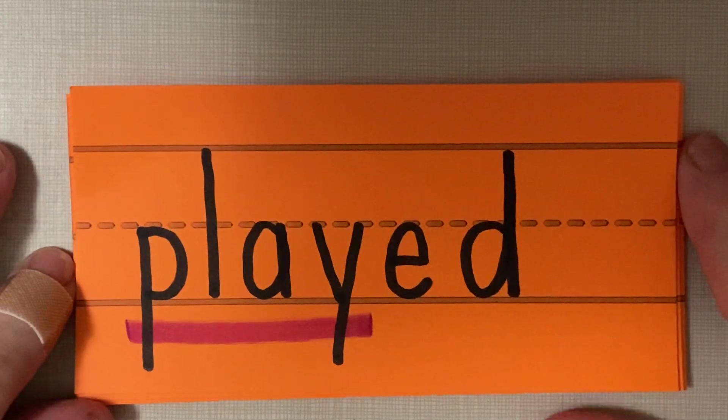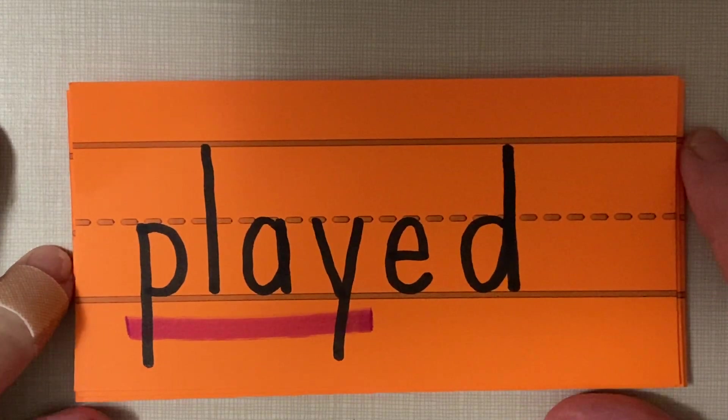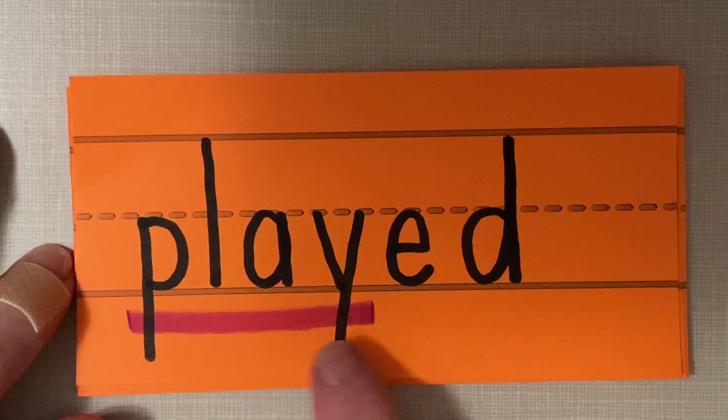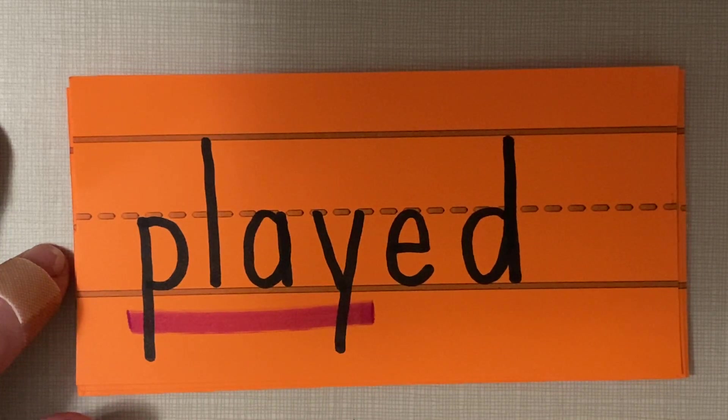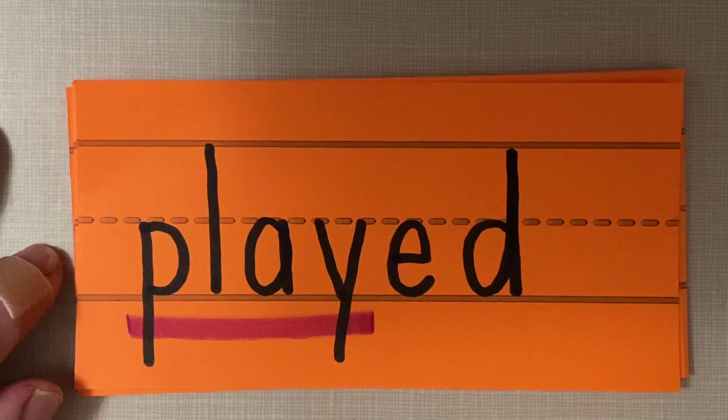Here are spelling words for this week. These are the words for Unit 23. The underlined part of all these words is the base word, and all of these words have the suffix ED.